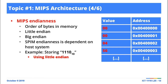So in terms of little Endian, what we discovered was that the least significant byte is stored in the lowest memory location. But for big Endian, it's the opposite — the most significant byte is stored in the lowest memory location.